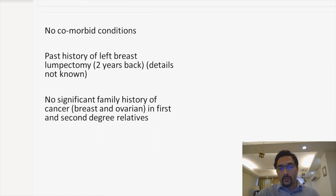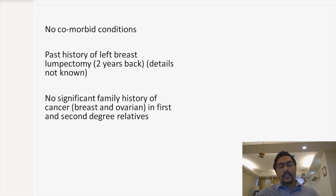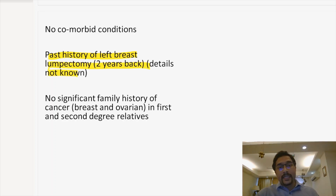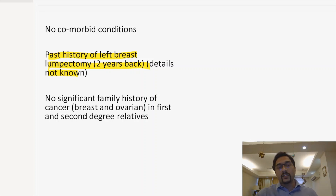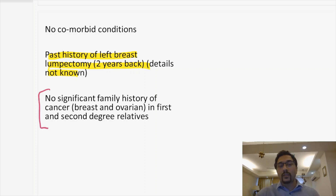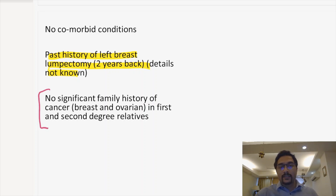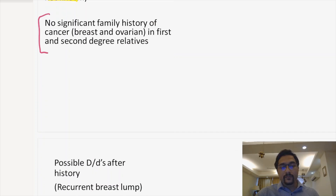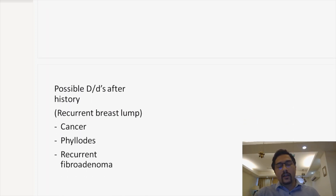No other comorbid conditions were present in this patient. Importantly, she had a history of past treatment — a left breast lumpectomy two years back, the details of which were not known. There was no significant family history of breast or ovarian cancer in first or second degree relatives. You have to take a history of breast and ovarian cancer in first and second degree relatives.